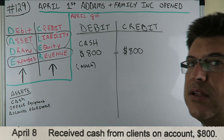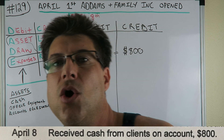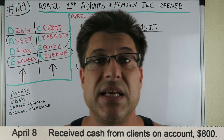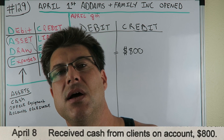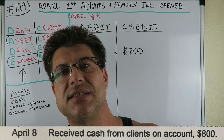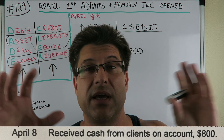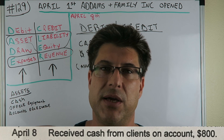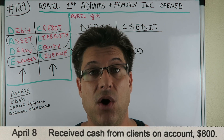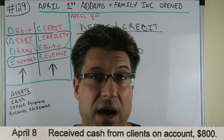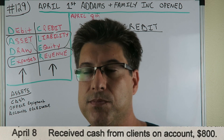We received money from a client on account — let's think about this logically. 'On account' usually means accounts payable or accounts receivable. If it were accounts payable, we'd owe somebody. Accounts receivable means somebody owes us. We just got paid, so that means someone did owe us — it's accounts receivable. They paid us because they owed us.